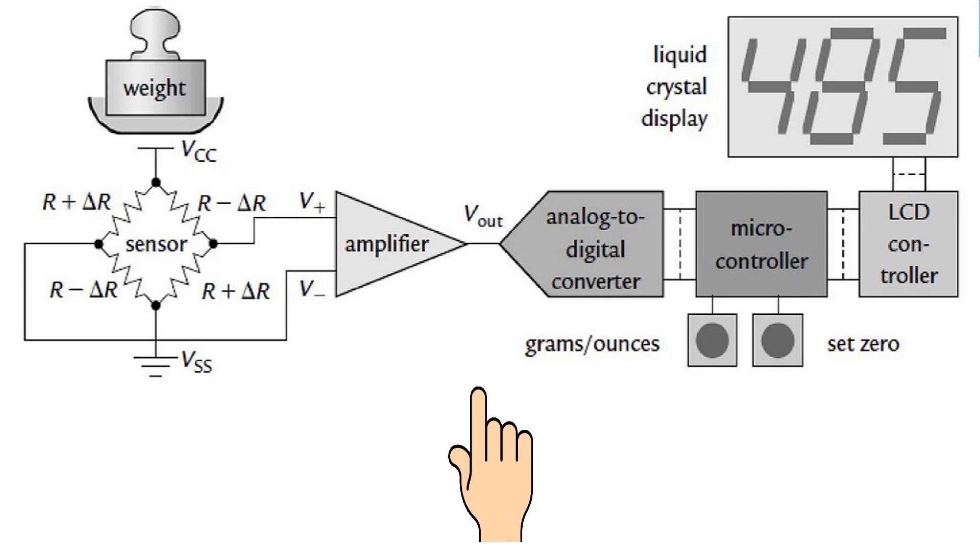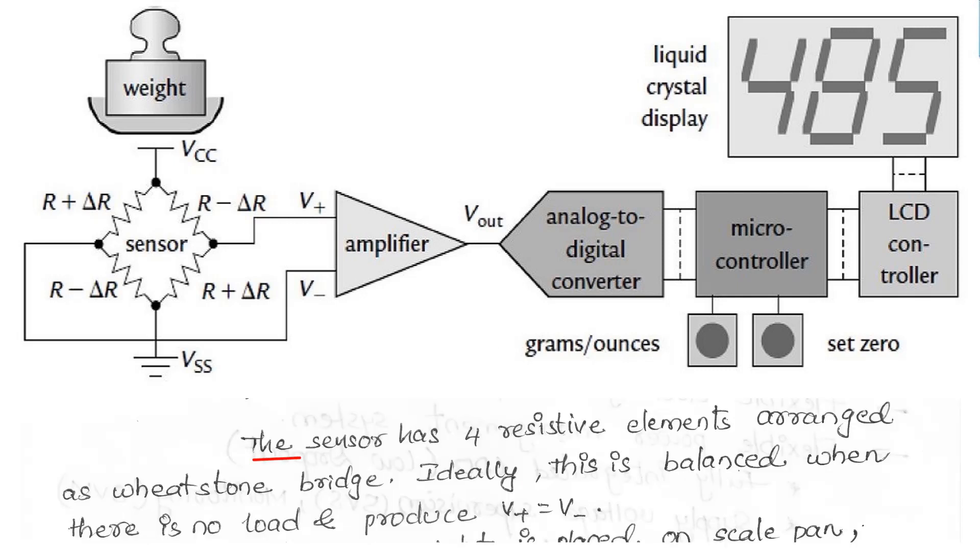The figure shows an example embedded system: the weighing machine. The sensor has four resistive elements arranged as a Wheatstone bridge. Ideally, this is balanced when there is no load and produces V+ equal to V-.